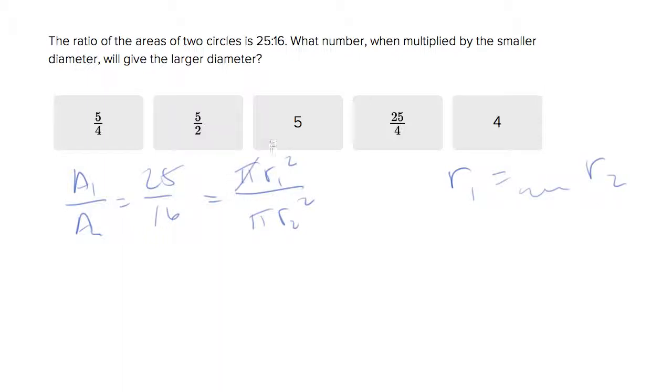So the pi's cancel. That's nice. And you get 25 r two squared equals 16 r one squared. We're trying to solve for r one, so we divide by 16 on both sides. And we get 25 r two squared over 16 equals r one squared. Let's take the square root of both sides.